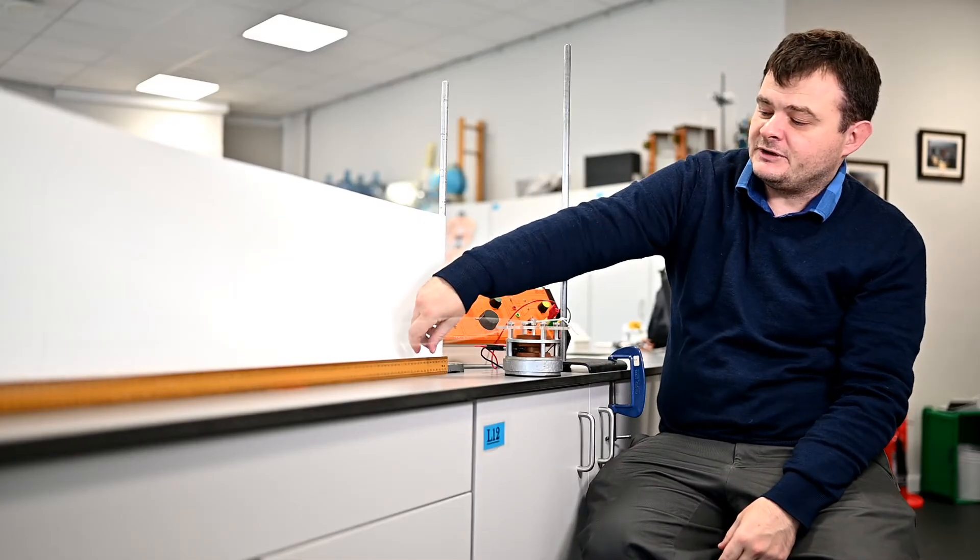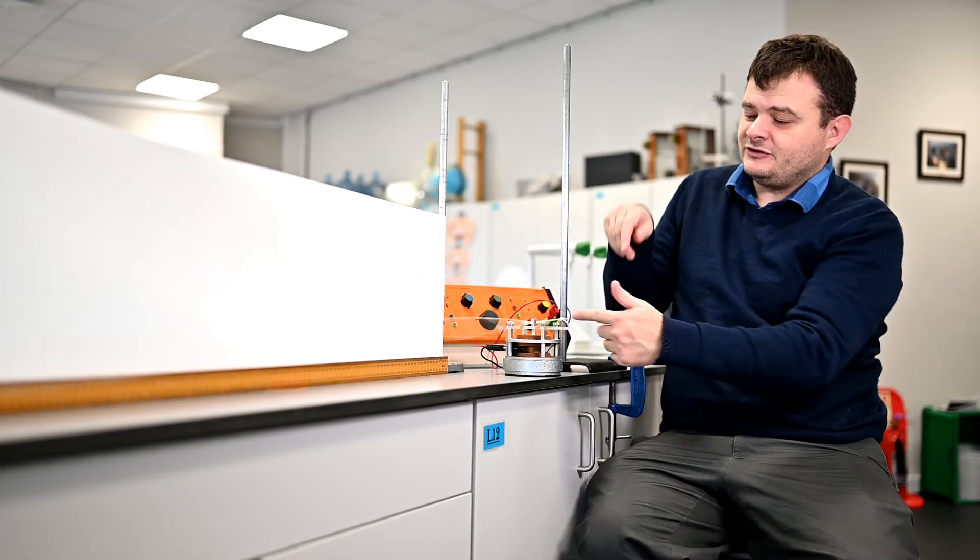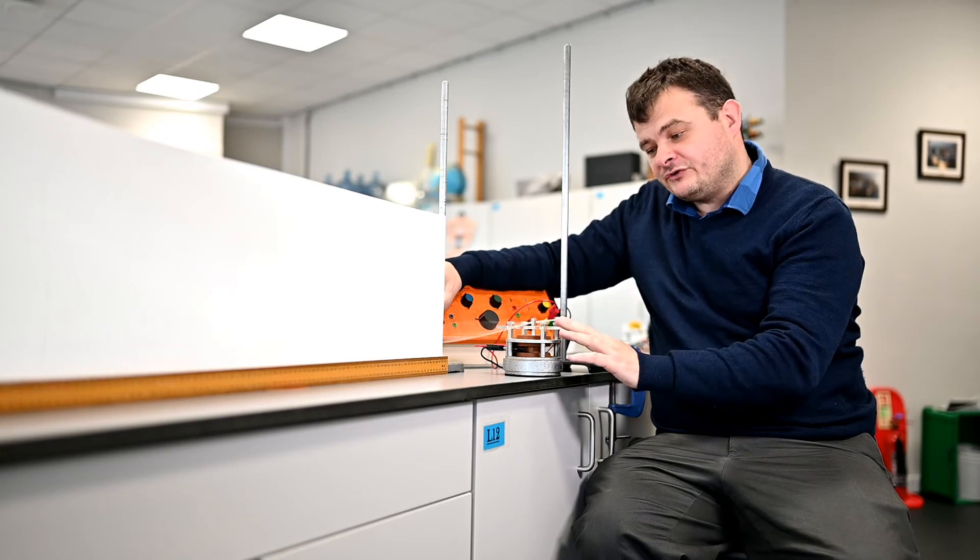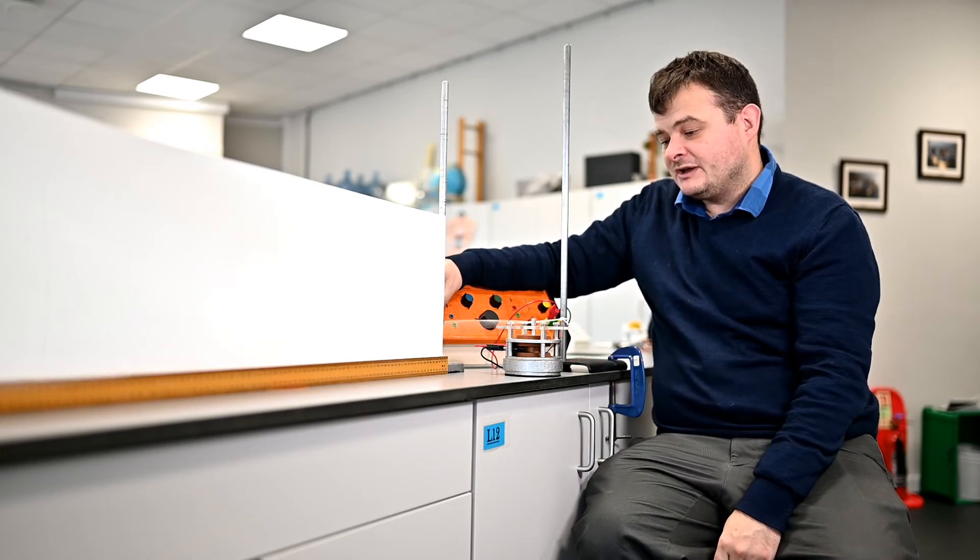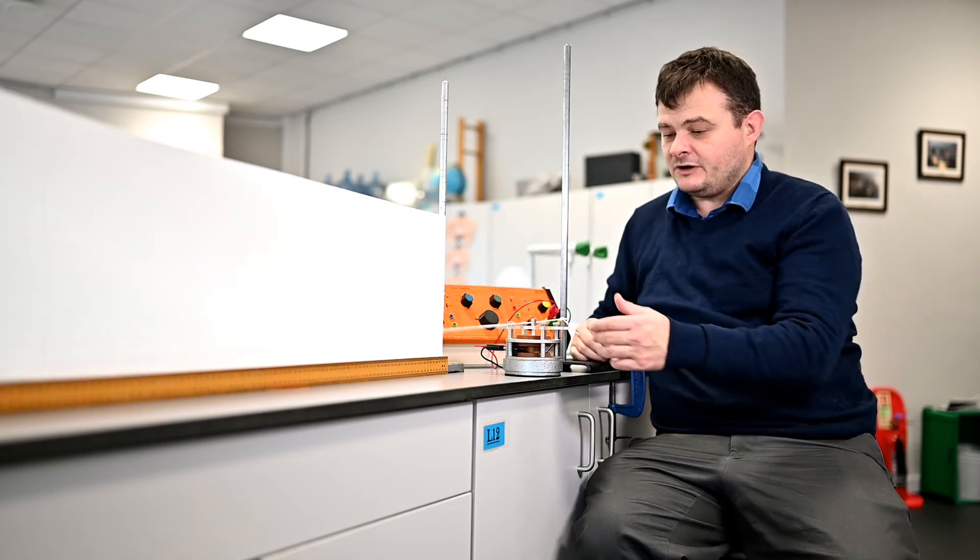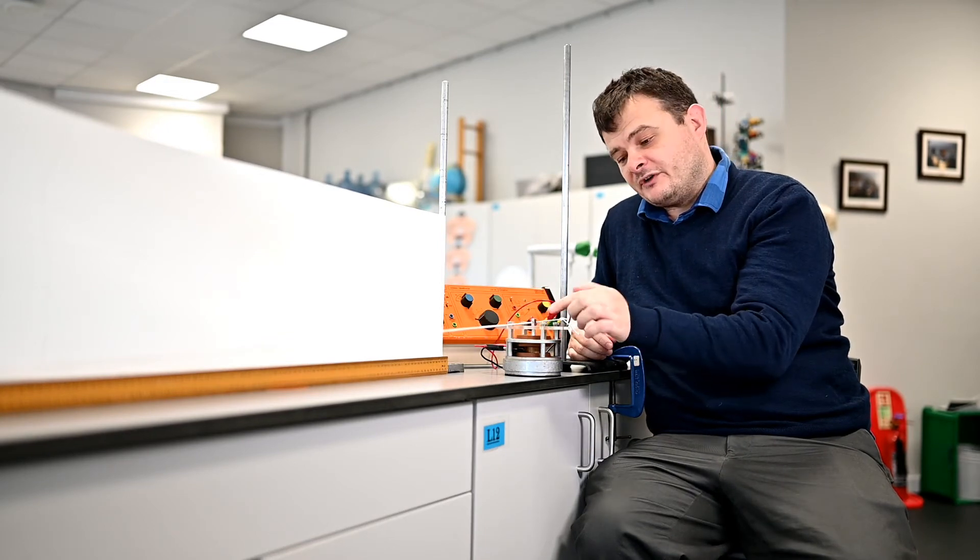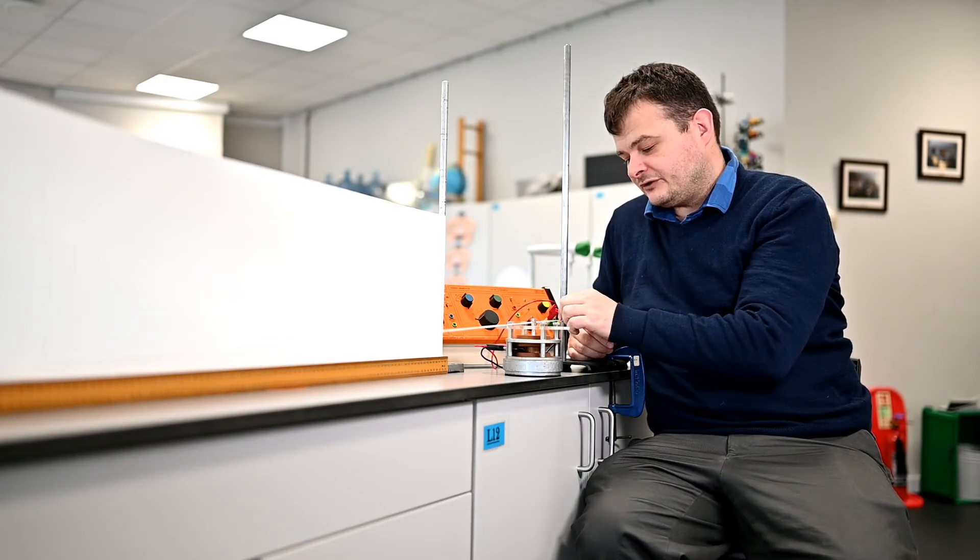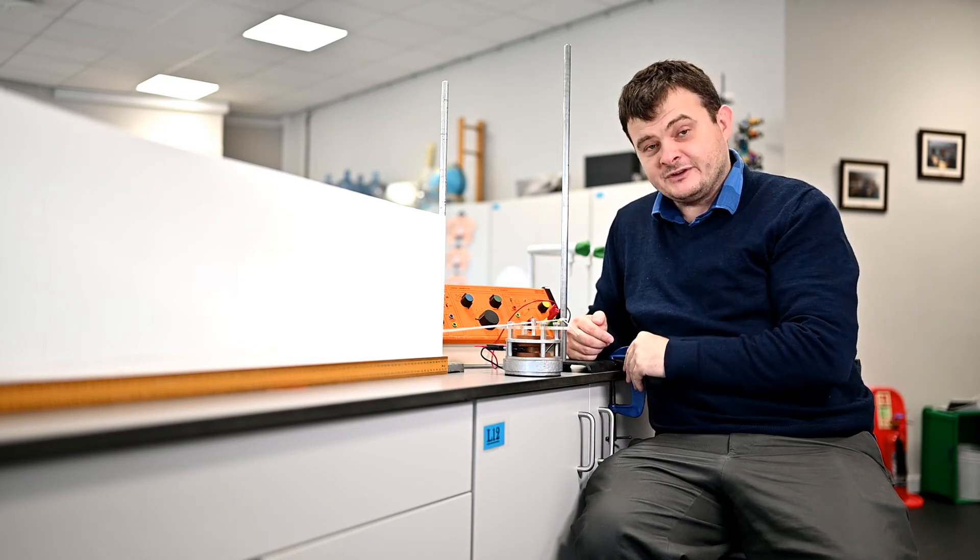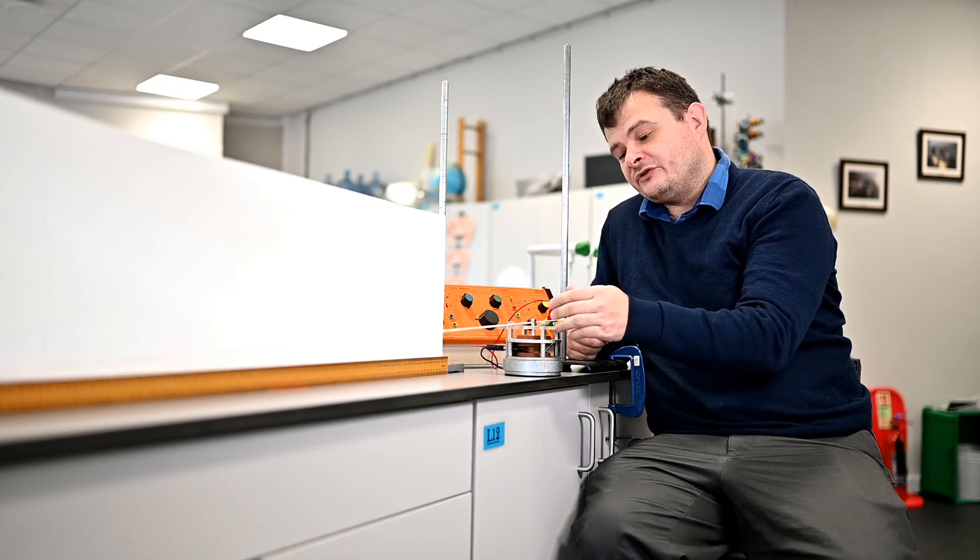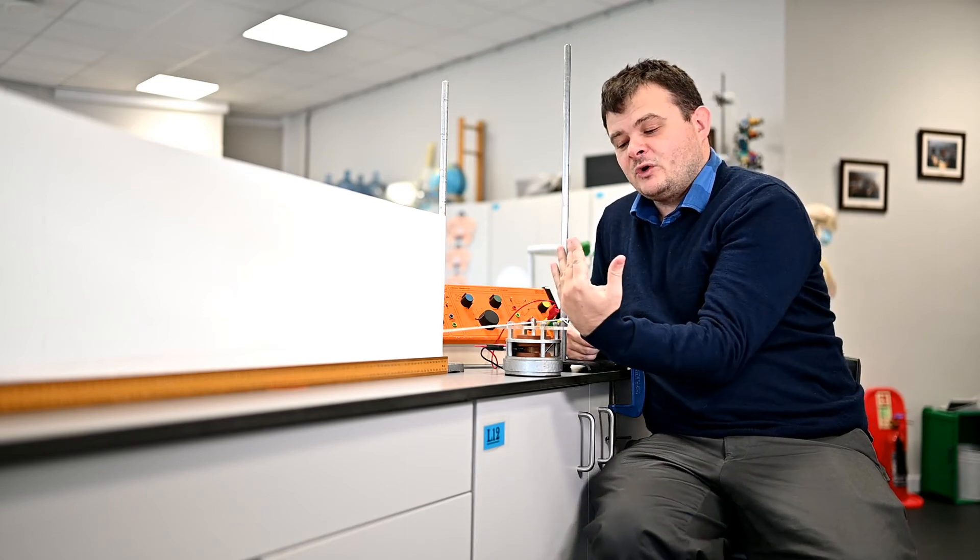So you can do a number of different investigations with this equipment. You can vary the length, that's what my meter rule is here to do, to measure the length. That's quite easy to do just by moving the vibration generator. And if I show you my setup here, you can see how I would do that. What I like to do is I like to pass the string through the hole in the top of the vibration generator and attach it to something solid, which this clamp's done that I've G-clamped to the table.